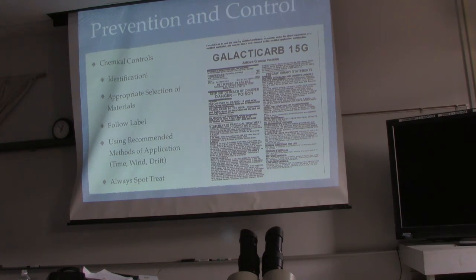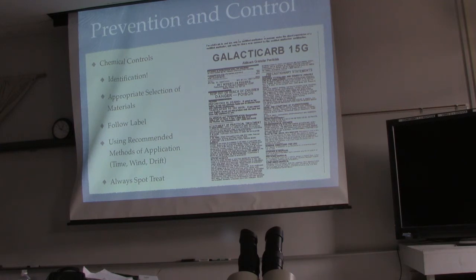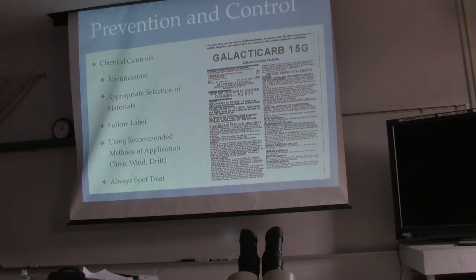For chemical controls, make sure you have the right identification of your insect, pathogen, or weed before applying any chemicals. Choose appropriate materials and follow the labels exactly. Consider using less than the recommended amount to see if that works — you can save money and do less environmental damage. Apply at the right time of day, avoid wind and watch your drift. Always spot treat; don't blanket your whole field.